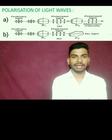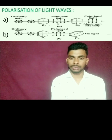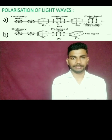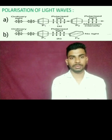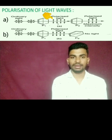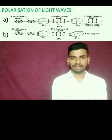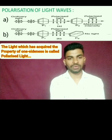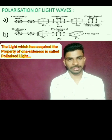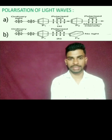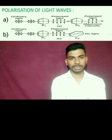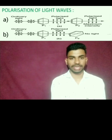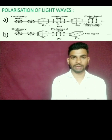You can see figure A here. Tourmaline crystals P1 and P2 are arranged parallel to each other. Ordinary light crosses the P1 crystal, and after crossing the P1 crystal, it is moving in only one side direction. You can see the straight line arrow lines here — this is the polarized light. The light which has acquired the property of one-sidedness is called polarized light. This polarized light is also passing through the P2 crystal, and after crossing the P2 crystal, this light is also moving in one side direction. We can see maximum intensity only in this case.